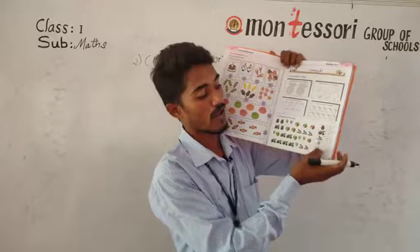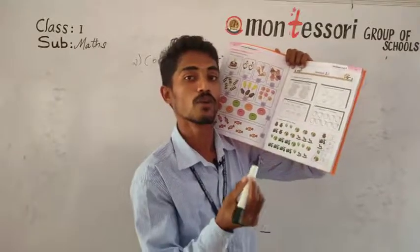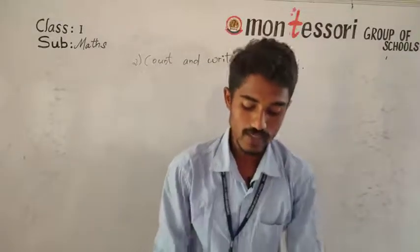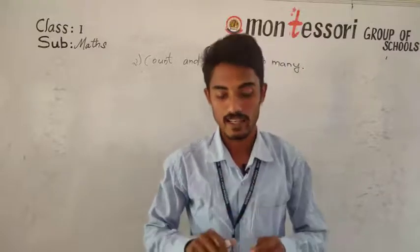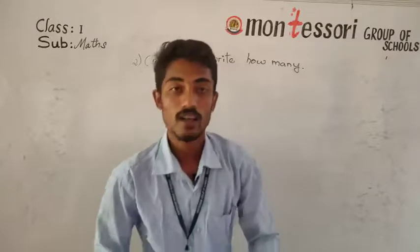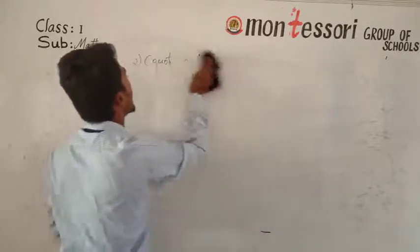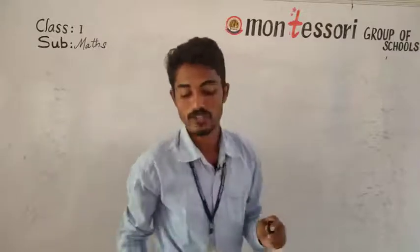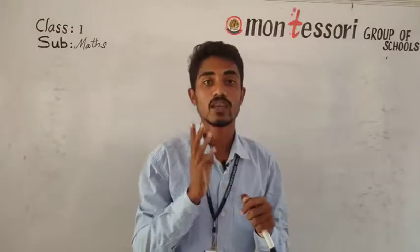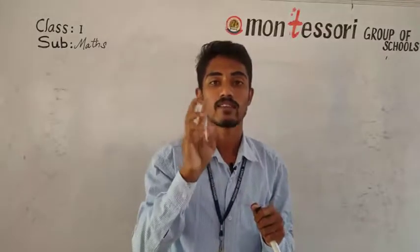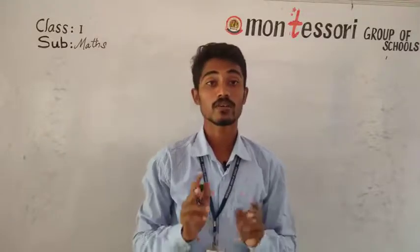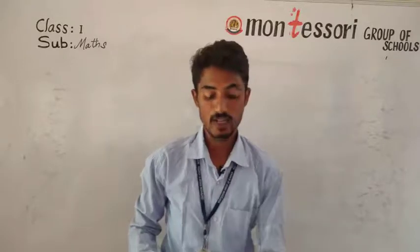The remaining two objects — balloon and ball — you have to count in the same way as homework. Take a picture and send it to your concerned class teacher. This completes two questions: counting and coloring, and counting and writing. Counting is from one to nine.